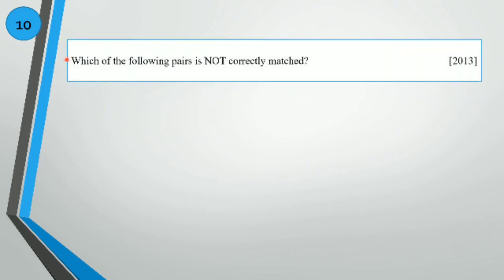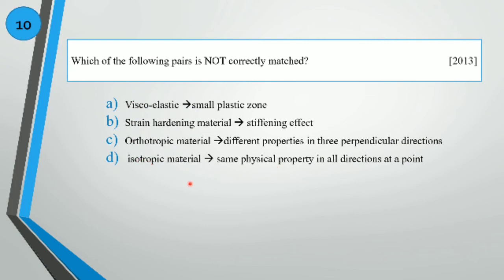Which of the following pairs is not correctly matched? Isotropic materials have the same physical properties in all directions at a point — correct. Orthotropic materials have different properties in three perpendicular directions — correct. Strain hardening materials have a stiffening effect — correct. Viscoelastic leads to a small plastic zone — this is not correctly matched, so that is the answer.